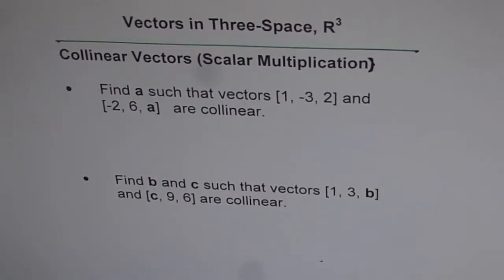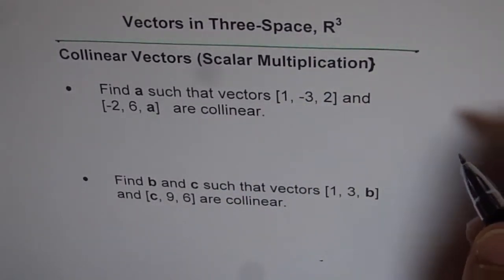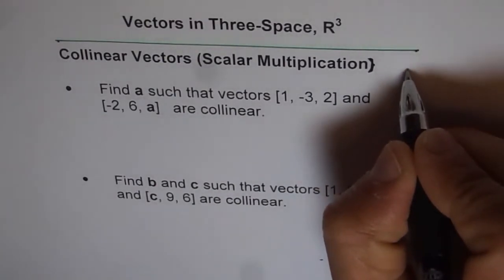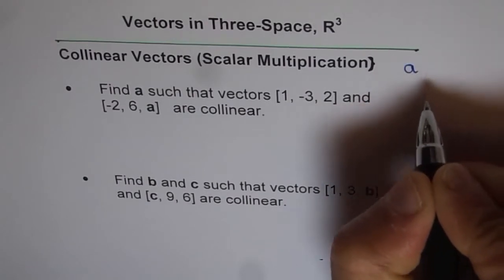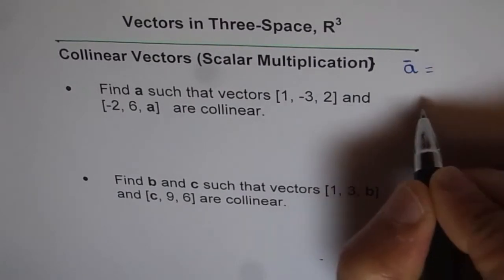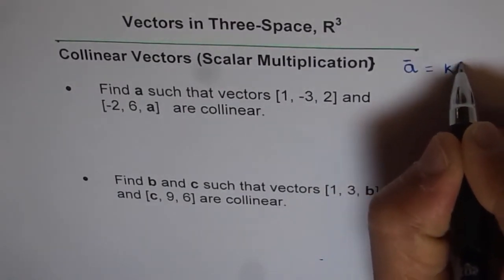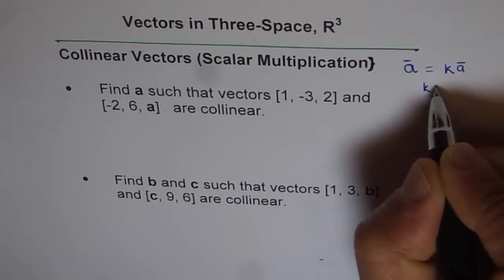Vectors in three-space are three-dimensional. Let's understand what collinear vectors are and solve related problems. Collinear vectors are vectors which are scalar multiples. If we have a vector a, then vector a will be collinear to another vector k times a, where k is a scalar number belonging to the set of real numbers.